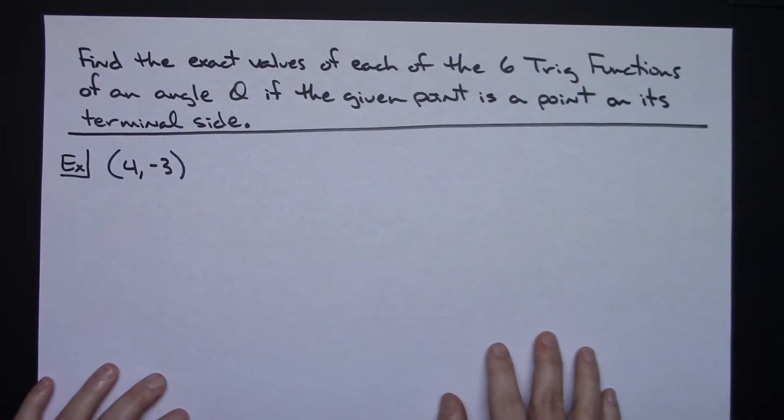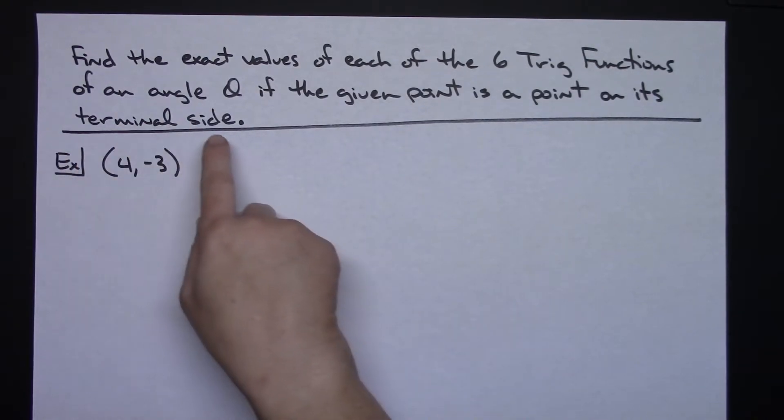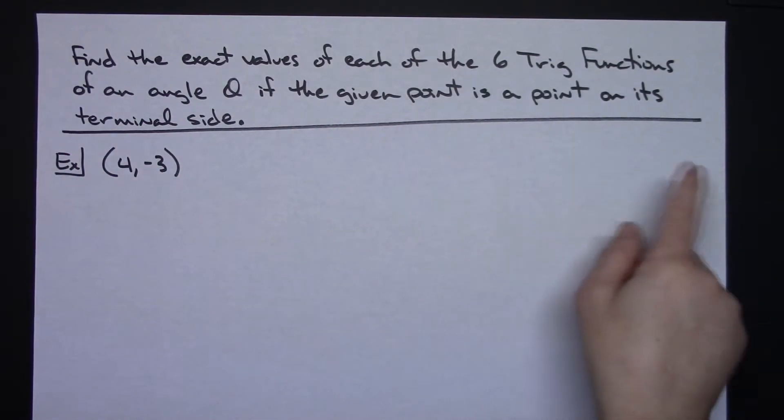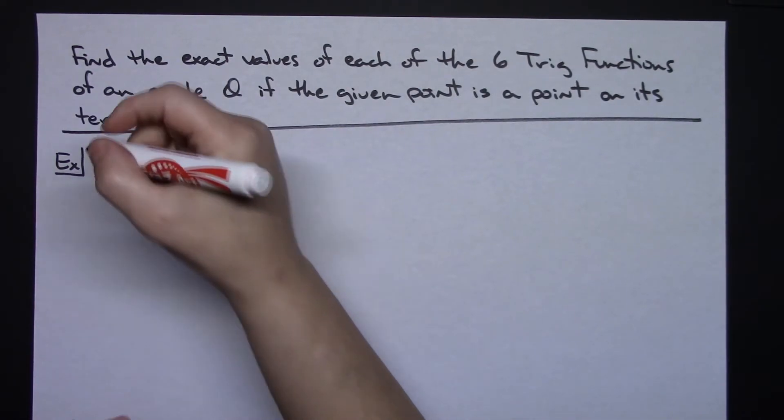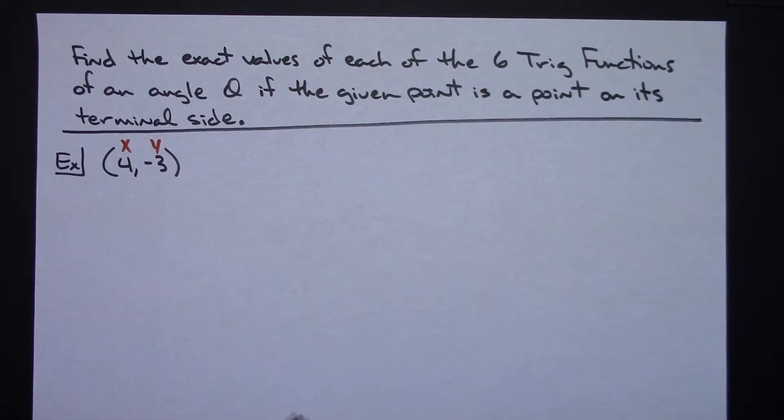So let's work out one example using these specific definitions here. So let's suppose our directions tell us to find the exact values of each of the six trig values functions of an angle theta if the given point is a point on its terminal side. So I have a point here, and it's on my terminal side of my angle. So I know that my x value is 4 and my y value is negative 3.